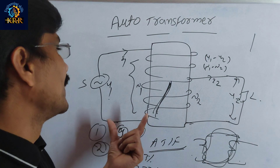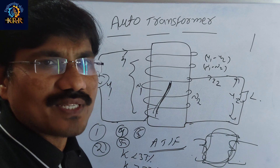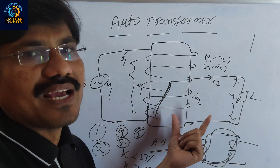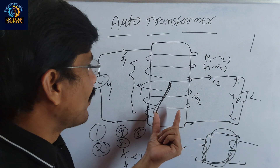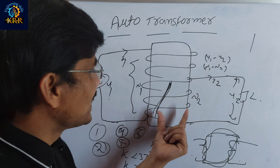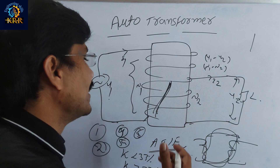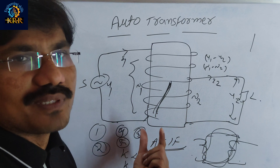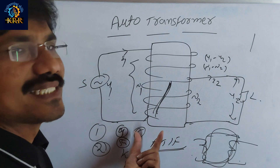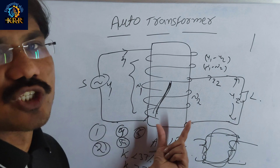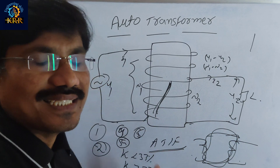Another drawback is that the percentage of impedance is low in an auto transformer, so the short circuit current will be high. In an auto transformer, the leakage flux is less, which means the impedance is less. Less impedance means a lower percentage of impedance, and therefore the short circuit current will be high.